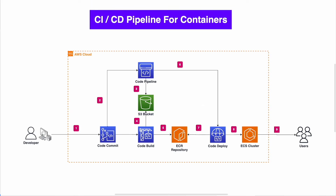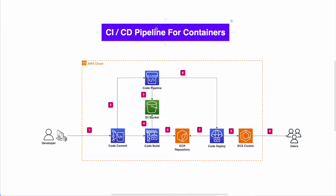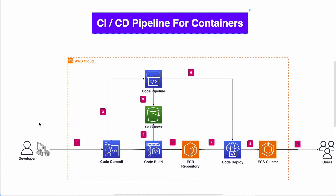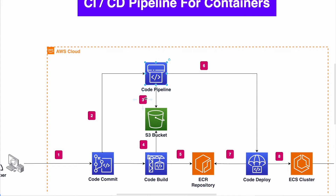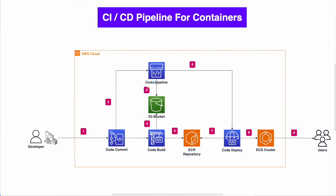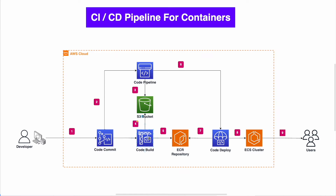Project number three is a CI/CD pipeline for containers. In our last project series we released a solution for EC2 with Node.js, and now we're doing one for containers. A developer builds a feature and pushes to CodeCommit. CodeCommit is connected to CodePipeline as a source and triggers it. CodePipeline's first step takes the code artifact from CodeCommit and pushes it to an S3 bucket for use in the next step.